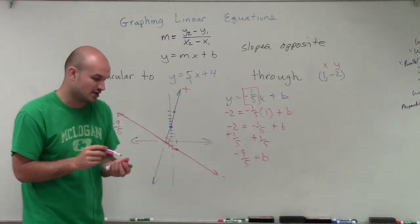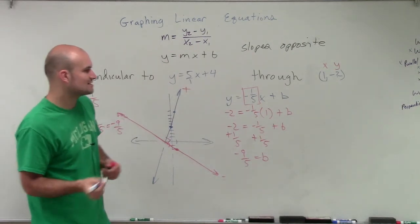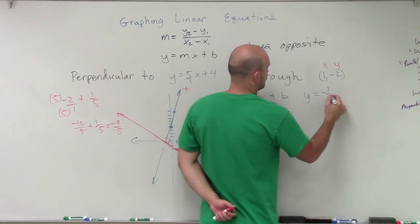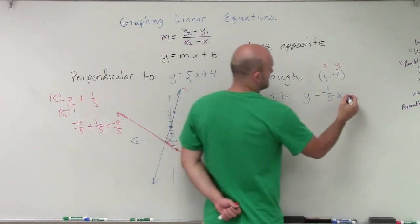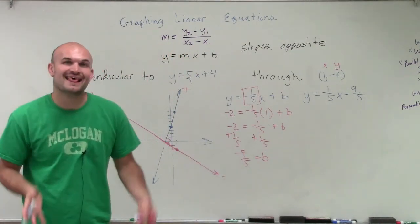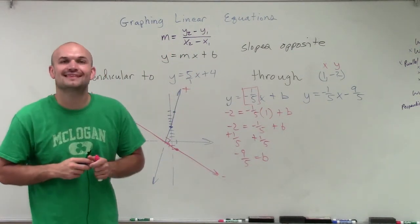I can now write the equation of my line that is going to be perpendicular to the line y equals 5x plus 4. So let's just rewrite it again. y equals a negative 1 fifth x minus 9 fifths. So there you go, ladies and gentlemen. That is how you graph a perpendicular line through a point. Thanks.